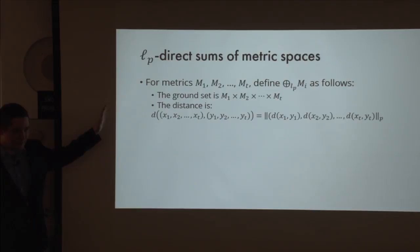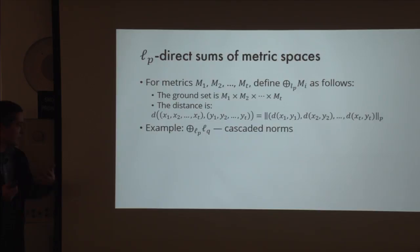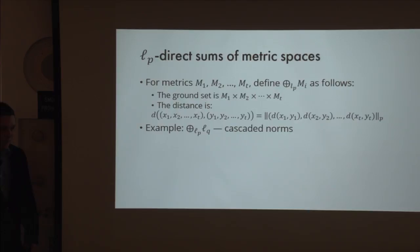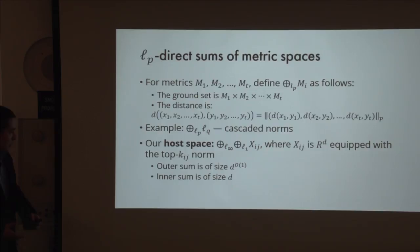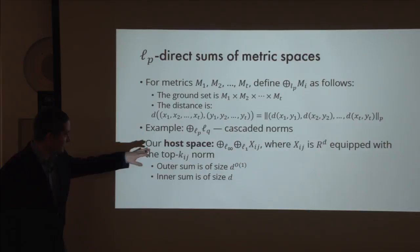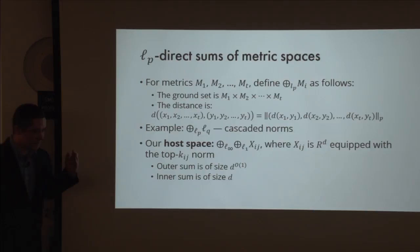In the literature, various things like this have been considered—for example, L_p sums of L_q distances. If you have a matrix, you compute L_q distances of every row and then L_p distance of these L_q distances. This is called cascaded norms. Our host space is an L-infinity sum of L_1 sums of X_{ij}, where X_{ij} is R^D equipped with the top-K norm for some value of K.